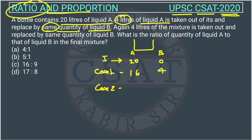So how we calculate is like 4 is how much part of 20. 20 is the total liquid. So 4 is 1 by 5 part of 20. So 1 by 5 part is taken out. So what is remaining? 4 by 5 part.